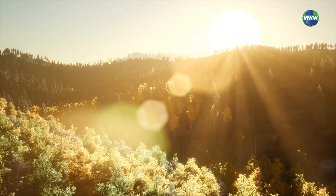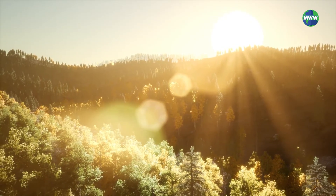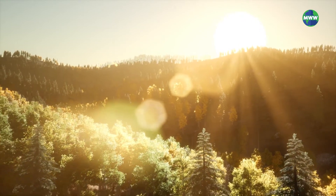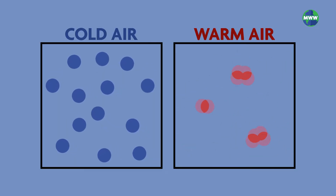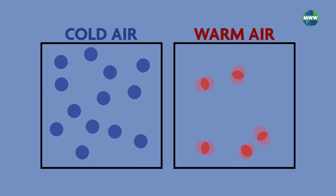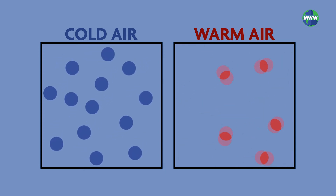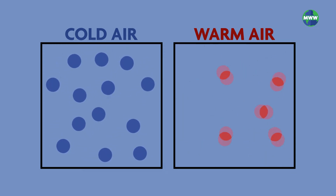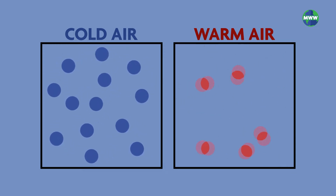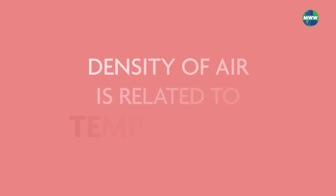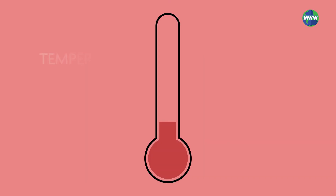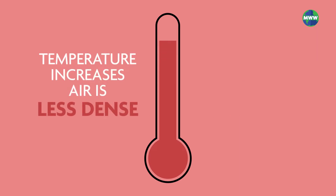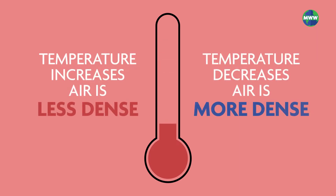In the atmosphere, surface heating from the sun causes air to warm. Warm air is lighter than cold air. Molecules of warm air move faster and farther apart than in cold air. Changes in air pressure are caused by changes in air density. The density of air is related to temperature. As temperatures increase, air becomes less dense. When temperatures decrease, air becomes more dense.